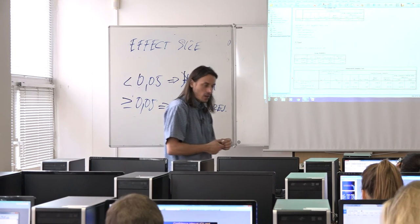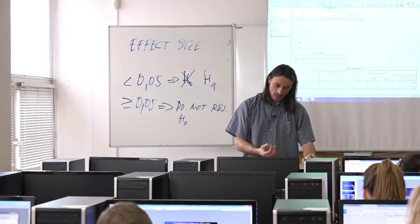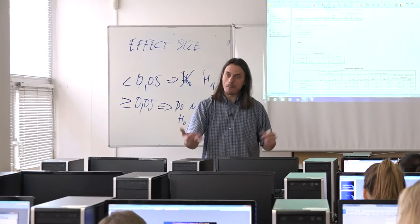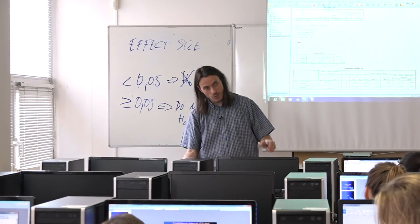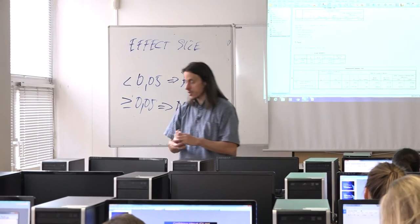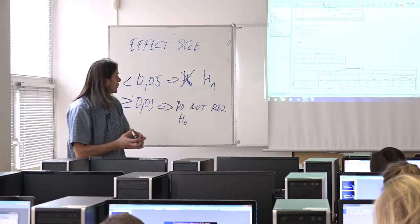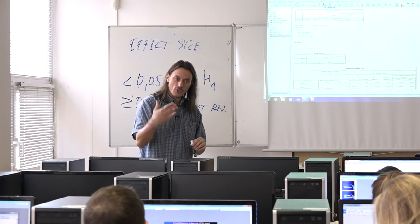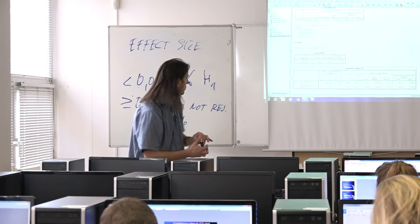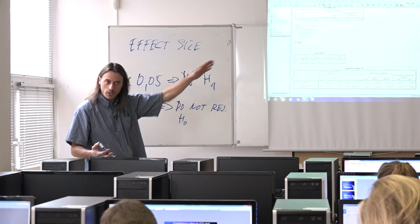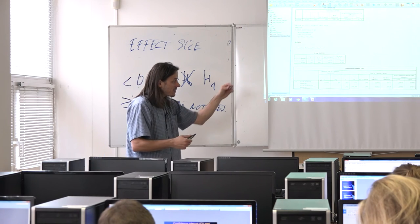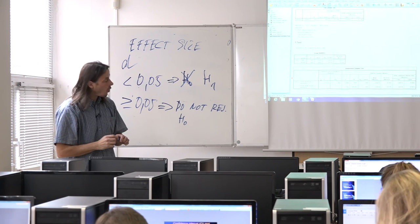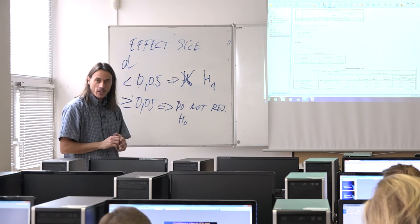Effect size for the two independent samples T-test is usually called Cohen's d — named after the psychologist Cohen who invented it. Unfortunately, SPSS does not compute it automatically. Cohen's d is computed by subtracting the two sample averages and dividing by the standard deviation of the data. In our case: approximately 0.72 minus 0.68, divided by approximately 0.45 joint standard deviation, giving approximately 0.1.